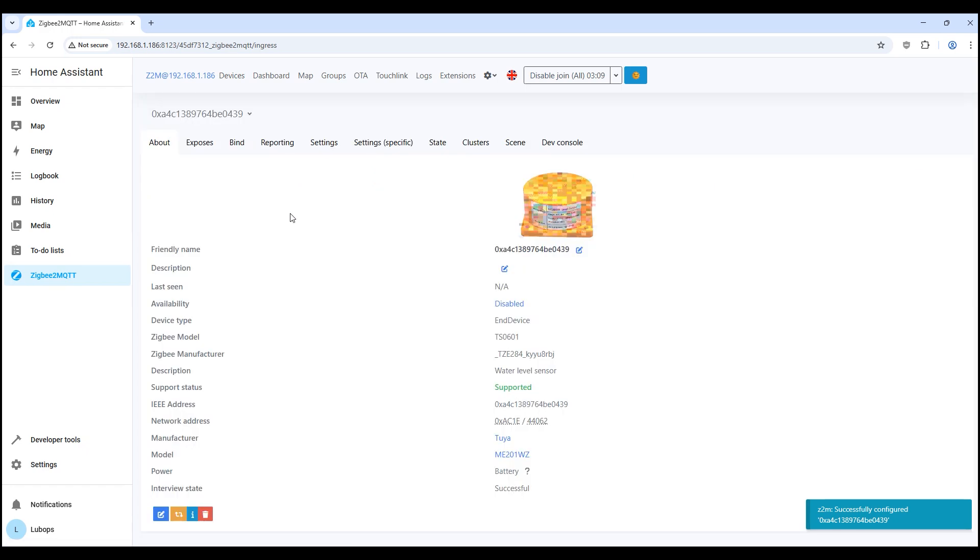When we click on the device, its card opens. Here is all the detailed information. We see that the device type is N-Device, the Zigbee model is TS0601, and the Zigbee manufacturer is underscore TZE284 underscore Q8RBJ. This is like an internal technical name. In the description, water level sensor. That is, this is really a water level sensor, not some kind of universal module. The support status is green, it says supported, which means that Zigbee 2MQTT recognizes it and can work with it, this is good. The power supply is indicated as battery, but there is a question mark next to it. Zigbee 2MQTT does not know what it works on. Although in fact we have external power from wires, so the question is logical. Availability currently disabled, but this is temporary. As soon as the sensor gives data, the status will change. The main thing is that the interview was successful. That is, Zigbee 2MQTT received all the necessary parameters.